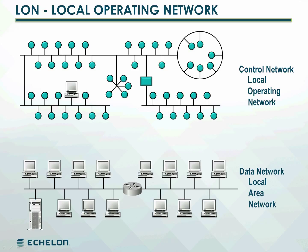Whereas data networks consist of computers networked together, control networks consist of sensors, actuators, and controllers networked together. Similar to data networks, control networks consist of devices attached to various communications media connected by routers that communicate to one another using a common protocol. In control networks, the components are optimized for the cost, performance, size, and response characteristics of control applications, enabling the networks to extend into a class of applications that data networking technology cannot reach.